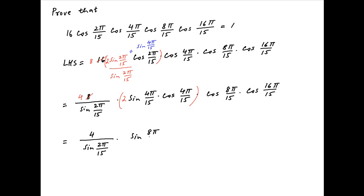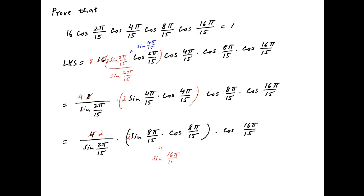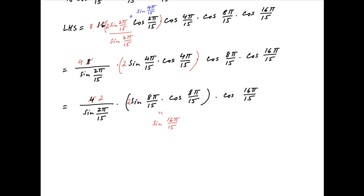Therefore the left hand side is equal to 4 upon sine of 2π upon 15, times sine of 8π upon 15, times cos of 8π upon 15, times cos of 16π upon 15. Again, 2 times sin of 8π upon 15 times cos of 8π upon 15 is equal to sin of 16π upon 15.